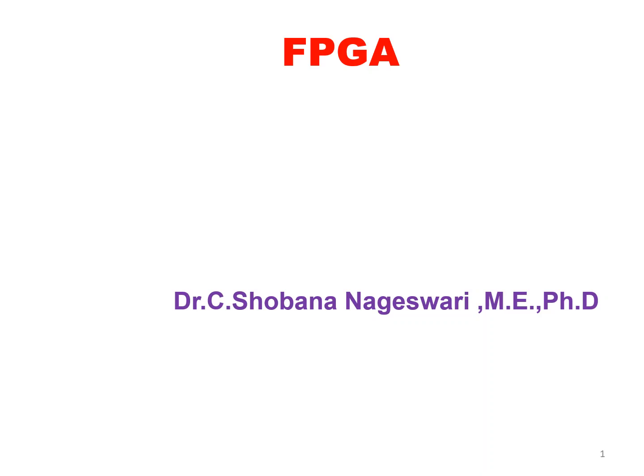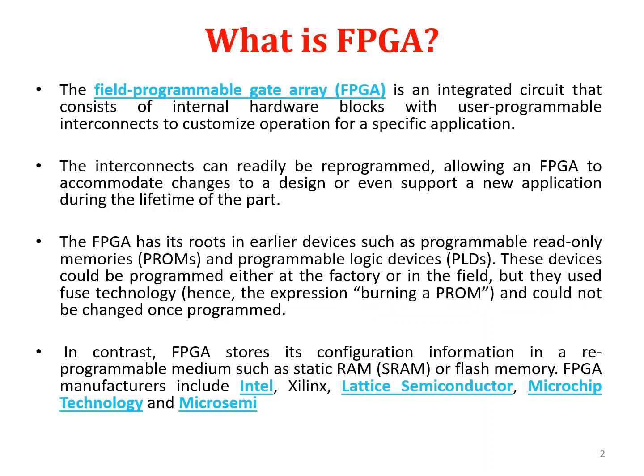In VLSI, we have seen the designs — combinational logic circuit designs, sequential logic circuit designs. After design, we have to come for the implementation part. For the implementation, we need an FPGA. FPGA is Field Programmable Gate Array. It is an IC. It will consist of hardware blocks with user programmable interconnects that is used to customize the operation for specific applications. We can get an FPGA as an IC from the vendors that can be customized.